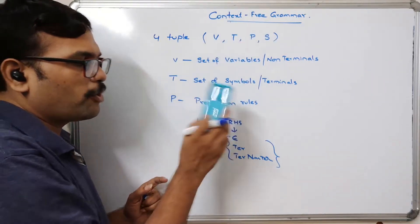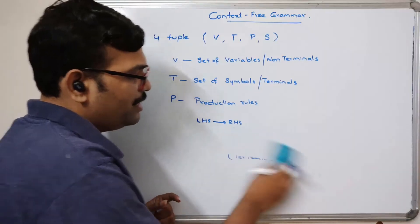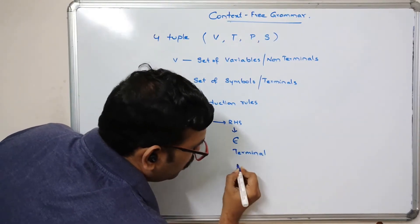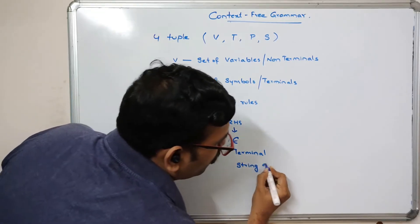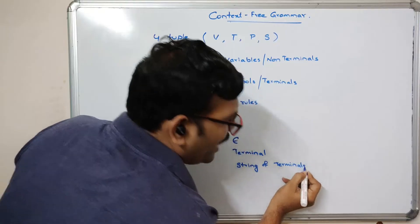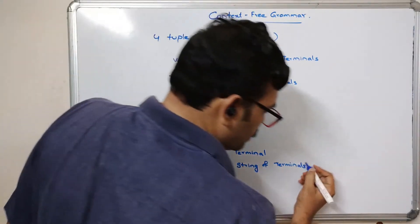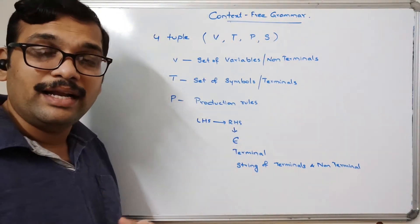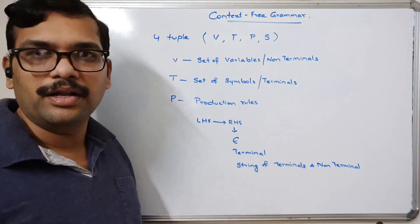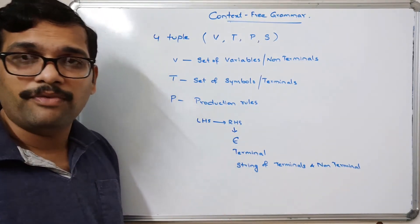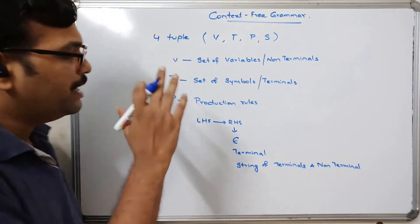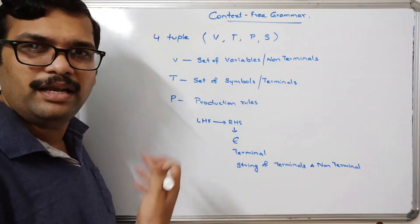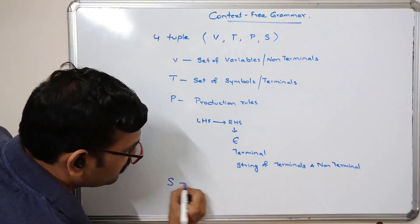In context free grammar, the LHS to RHS production differs: the right hand side can be epsilon, a terminal, or a string of terminals and non-terminals — any combination. In regular grammar the right hand side must have exactly one terminal and one non-terminal, but in CFG there is no constraint on the number of symbols on the right hand side. S is the start symbol.